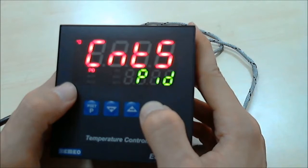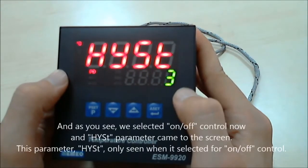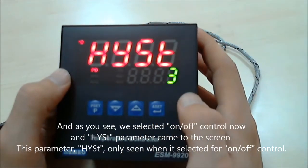If you select on-off control, you will see hysteresis parameter from here.